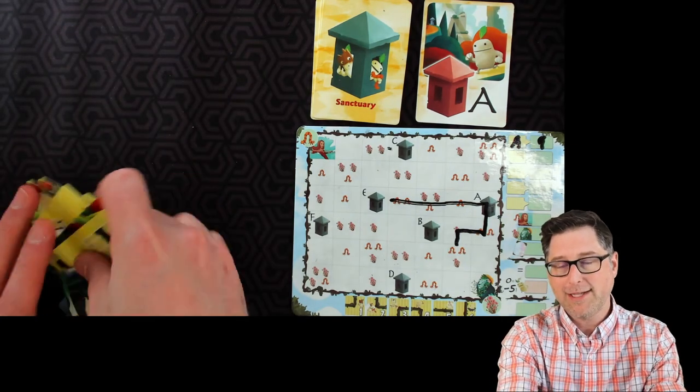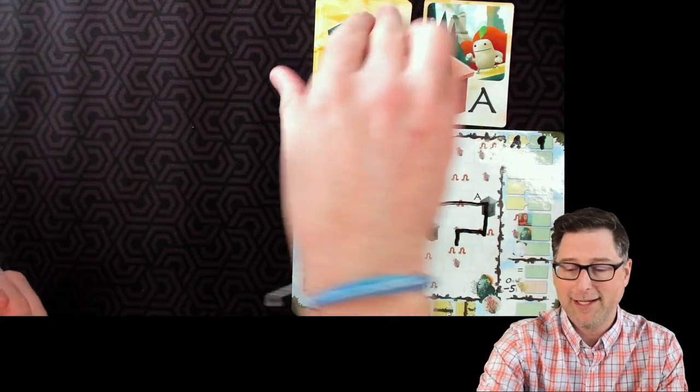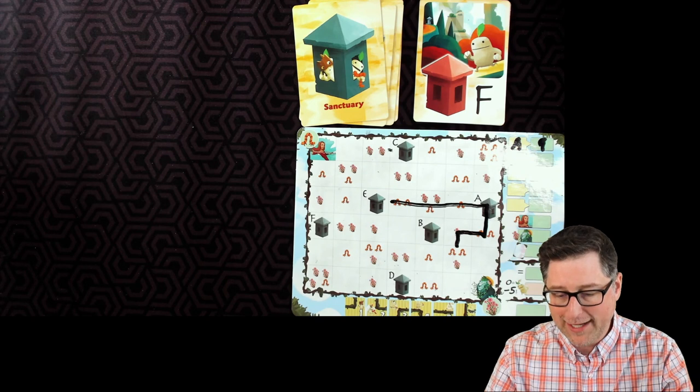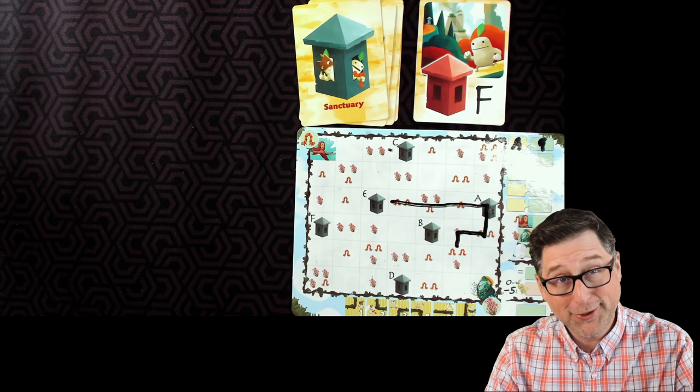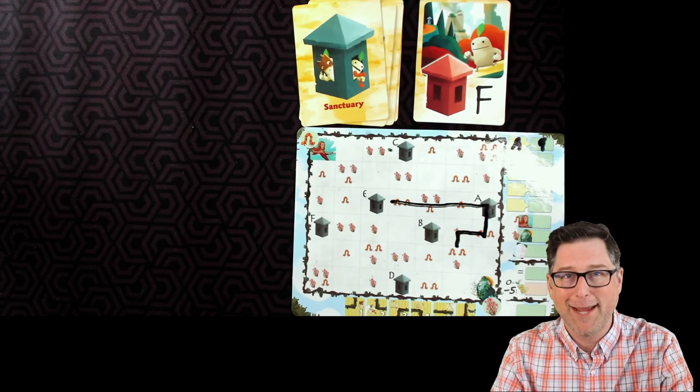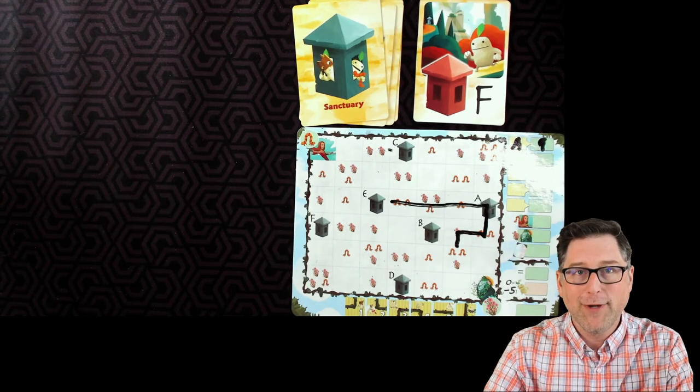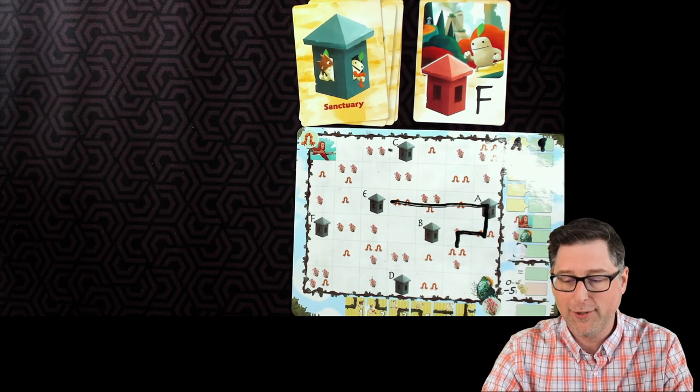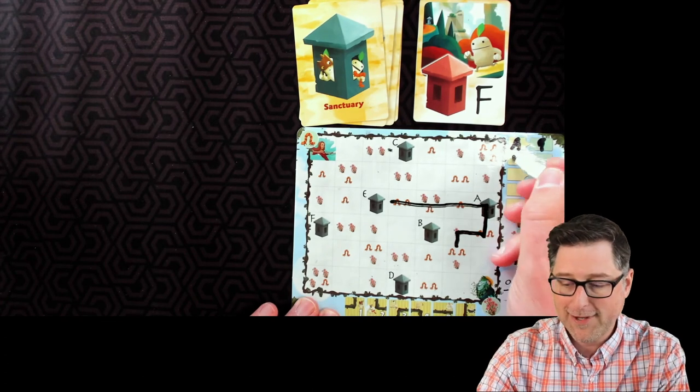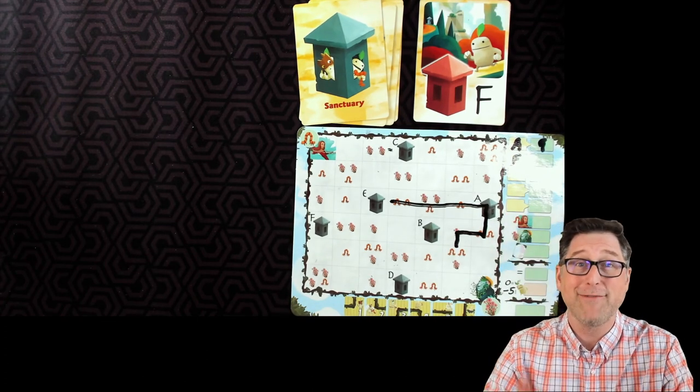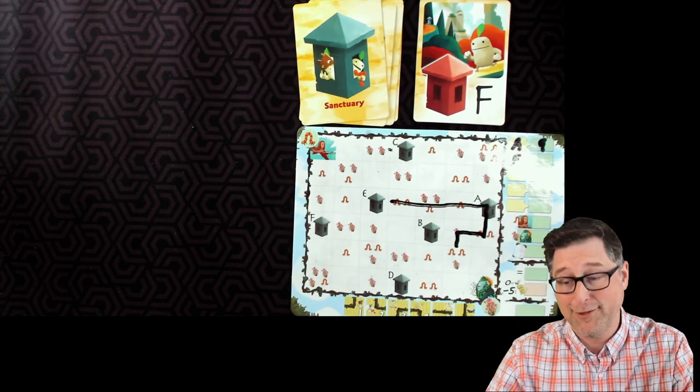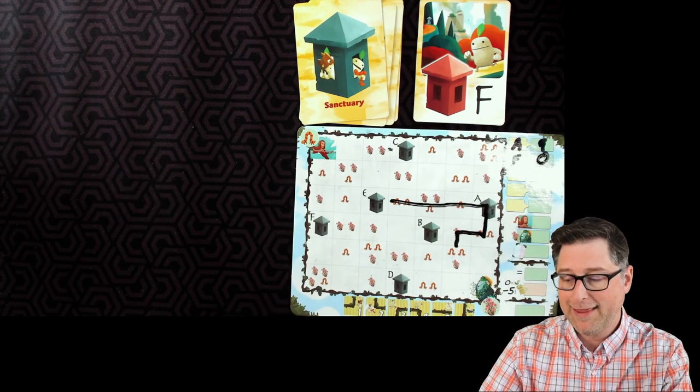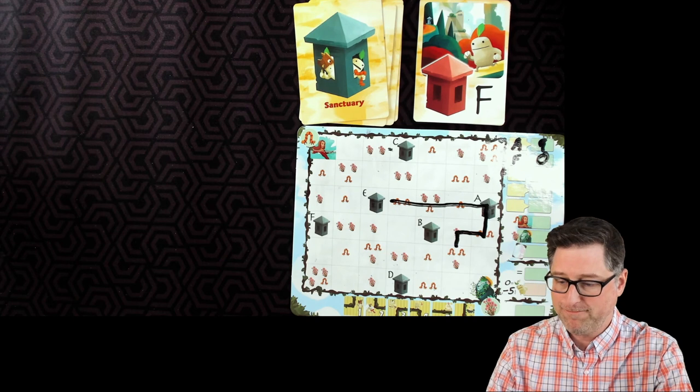And now we flip over the next sanctuary card, which again, we'll be using that online template. But just to show you, we flip this over and it is F. And now we're playing towards F. And one of the tricky rules here, one of the things I find so intriguing about this game and just so fun and challenging. Each round, you have to score more than you did the previous round. So a tie won't even count. So I need to score in this next round where we're playing towards F. I have to score 10 or more points. If I don't, it gets reduced to zero. So if I score, let's say eight points, I have to write a zero here.